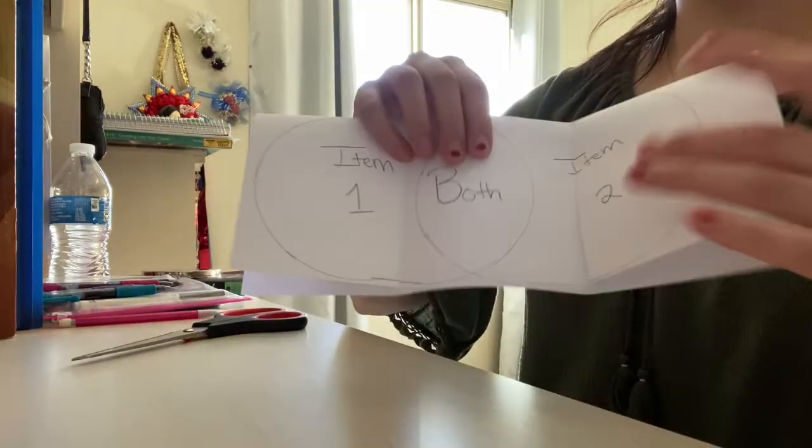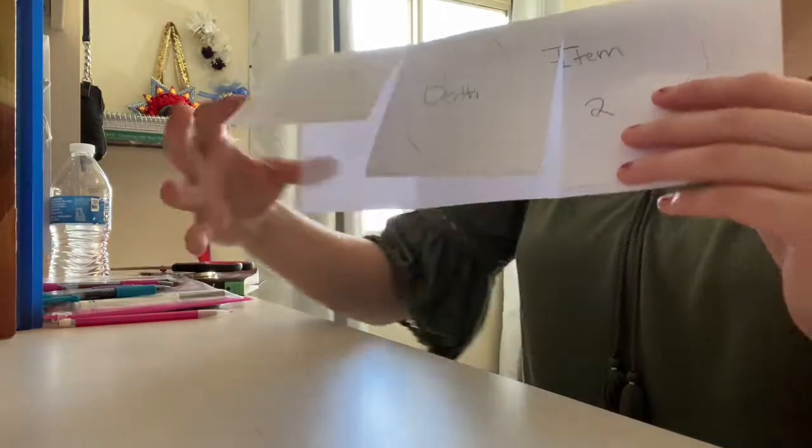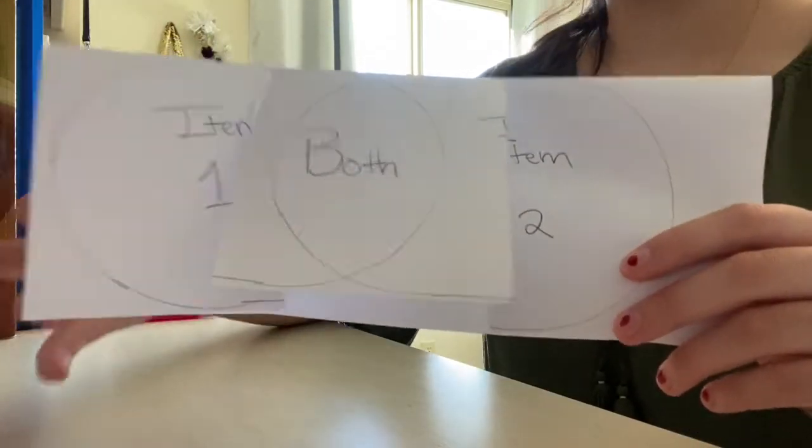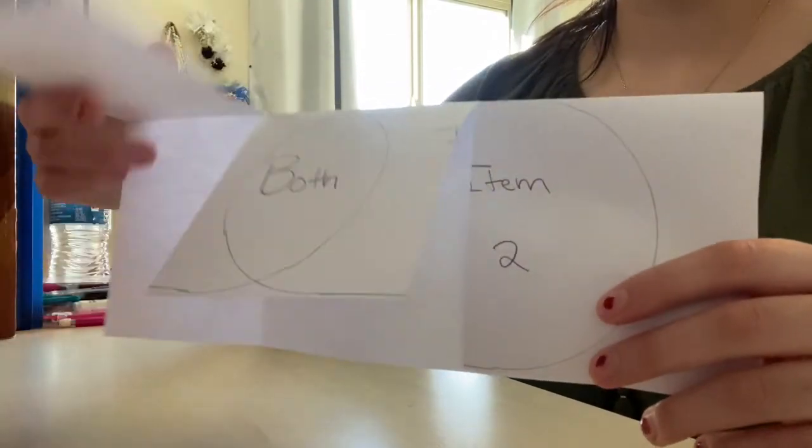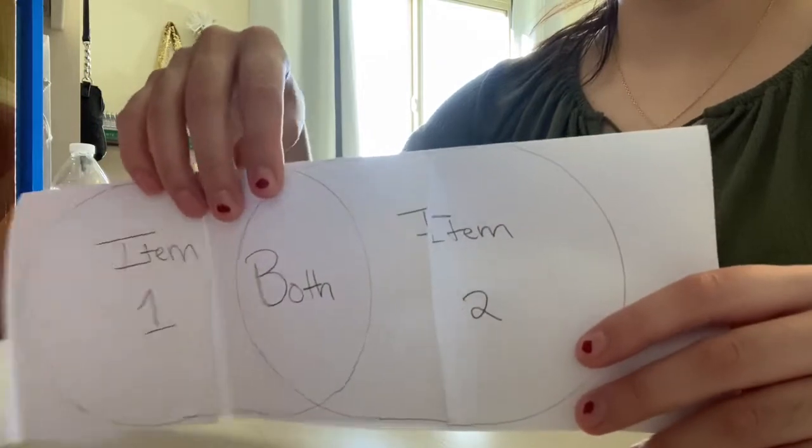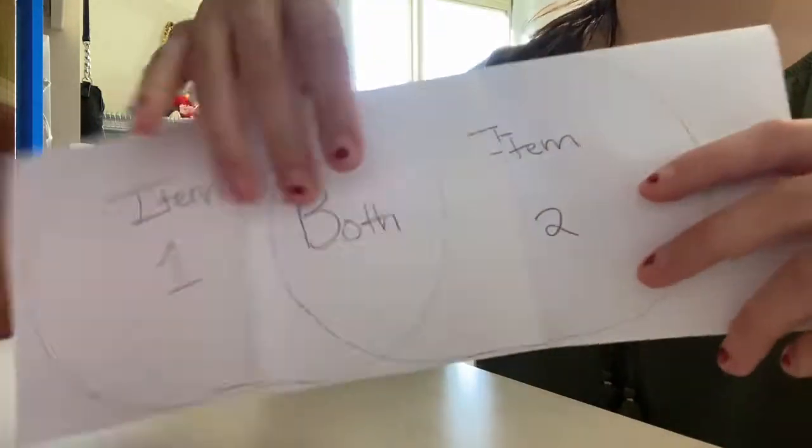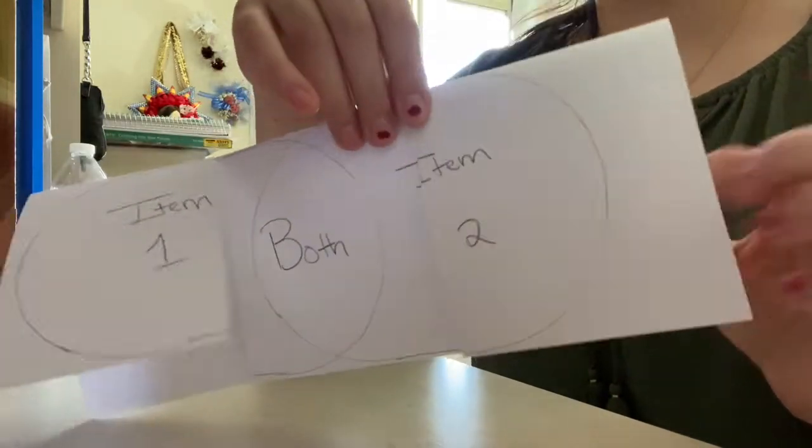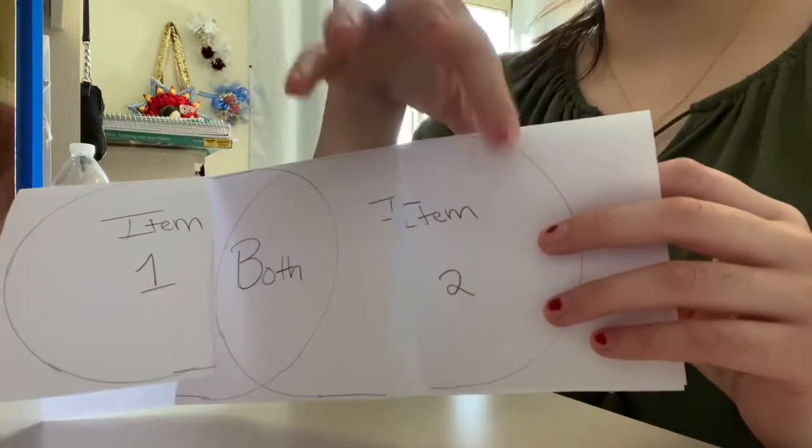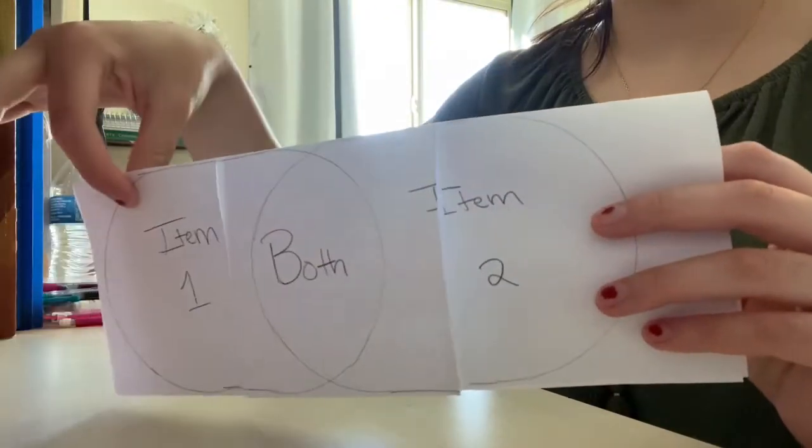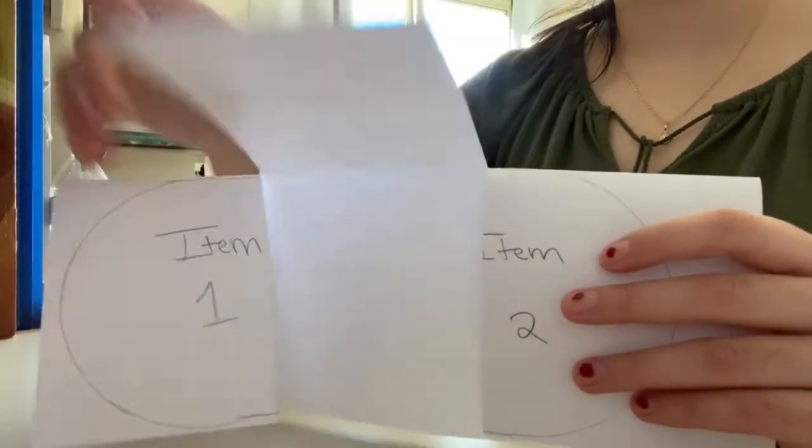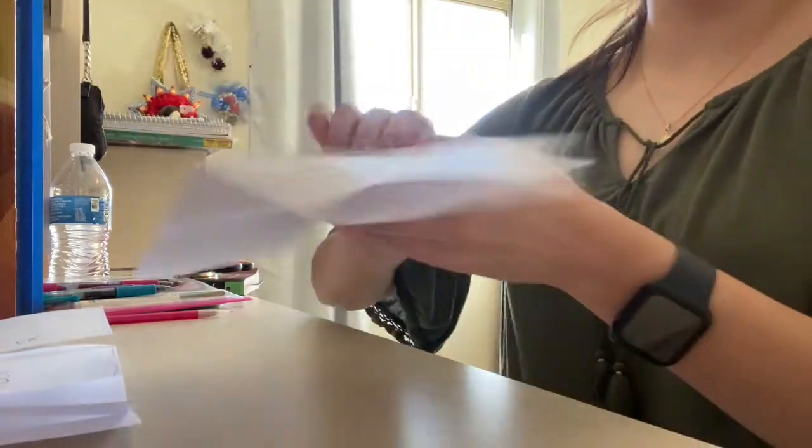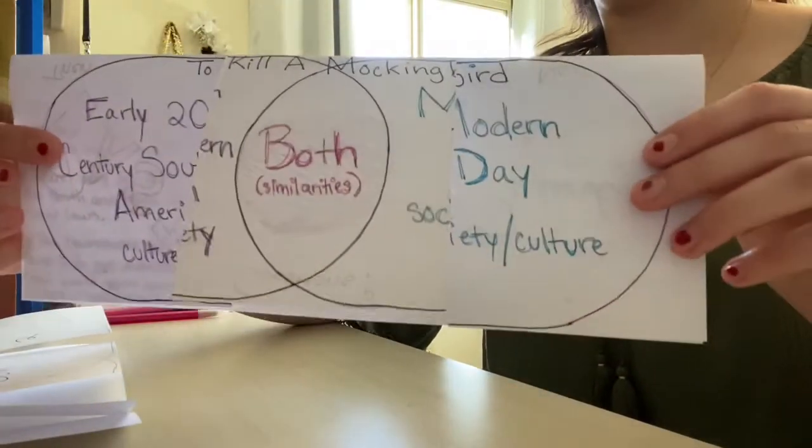Now on the inside, what you'll be putting is things that stood out to you for this item that make it different from item two and vice versa. You can do bullet points, whatever you feel like, that make item two different from one, and in the middle you do the similarities. So now I'll show you how mine came out.